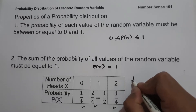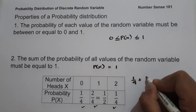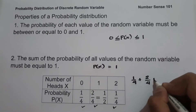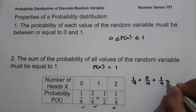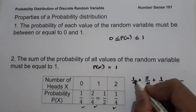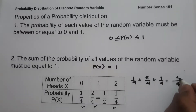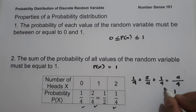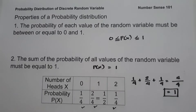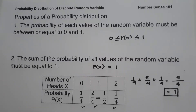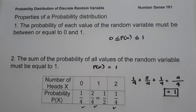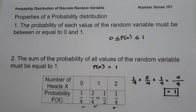For example, one-fourth plus two-fourths plus one-fourth — copying the denominator, that is four — gives us one plus two plus one equals four, and four over four equals one. Always remember, the sum of the probabilities of all the values of the random variable must be equal to one. These are the basic concepts you need to remember to understand the probability distribution of a discrete random variable.